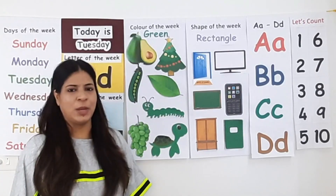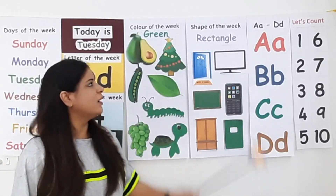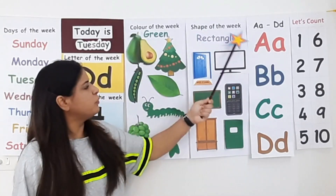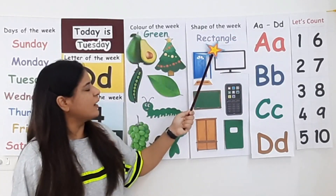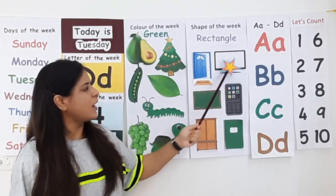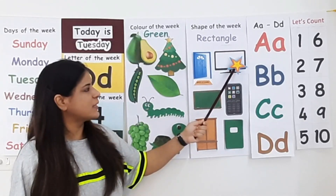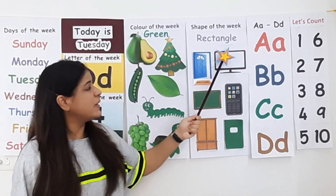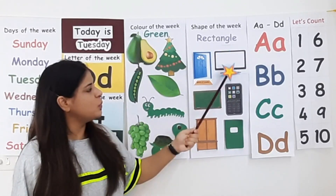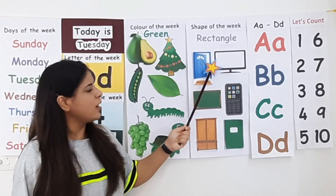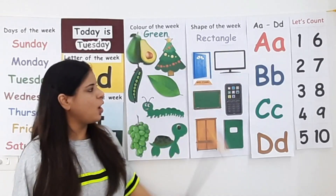Now let's see the shape of the week. Shape of the week is rectangle. A rectangle is also a four-sided shape like a square, but in a rectangle two sides are long and two sides are short.